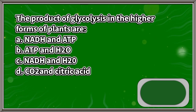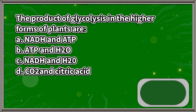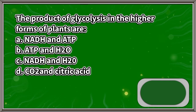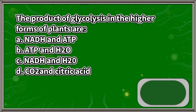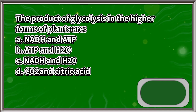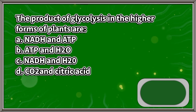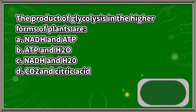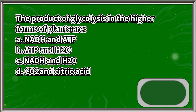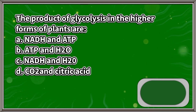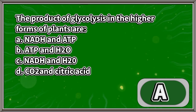The products of glycolysis in the higher forms of plants are: A. NADH and ATP, B. ATP and H₂O, C. NADH and H₂O, D. CO₂ and citric acid. The answer is letter A.